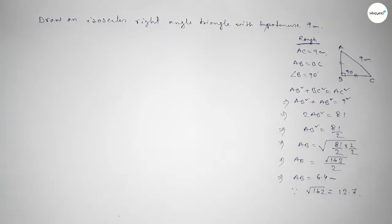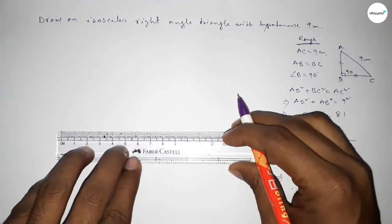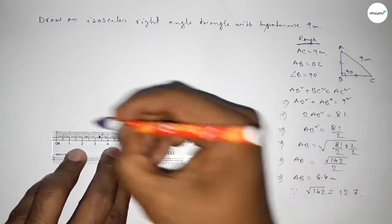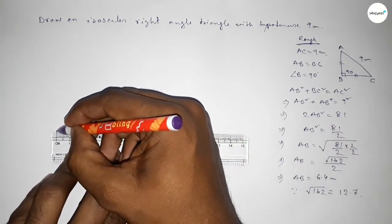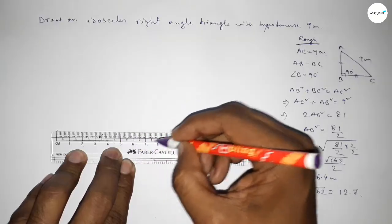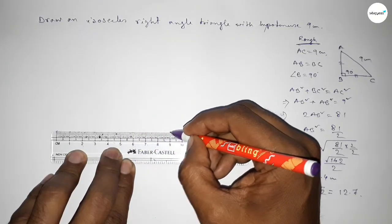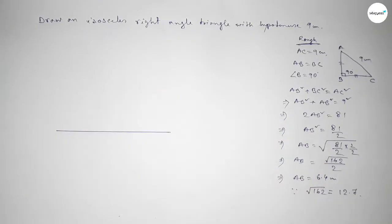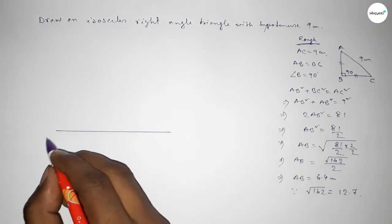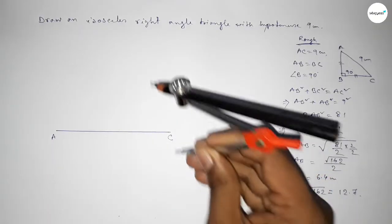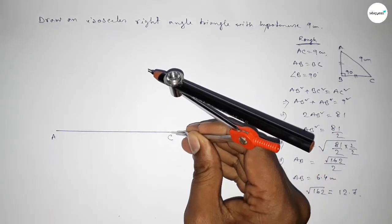Now drawing the triangle. Putting the scale here and drawing a line of length 9 centimeters. This is 9 centimeters — taking point A here and point C here. Now we have to bisect this line AC.